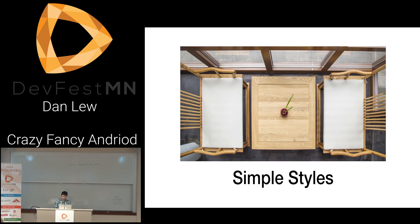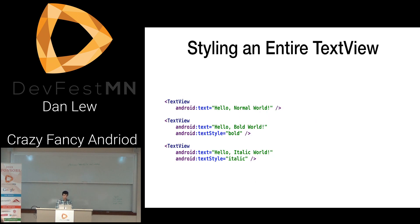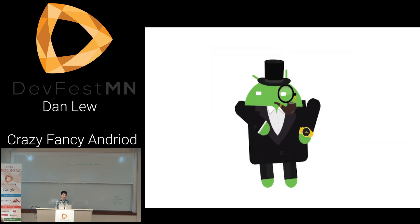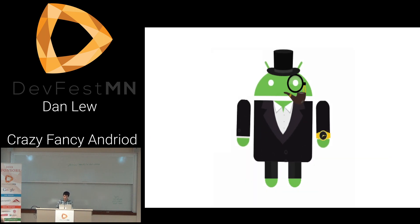So how do you make fancy text? The simple styling that probably everyone's familiar with is just styling an entire text view — a normal sentence, a bold sentence, an italic sentence — by adding XML attributes. There's a whole bunch of XML attributes you can change: the typeface, different sizes, different colors, different background colors. But that is not fancy. I promised fancy, and it's really boring if the entire text view looks exactly the same.